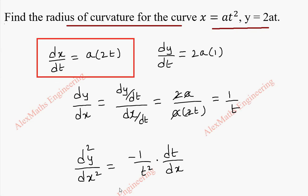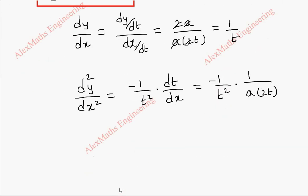So this is minus 1/t² into 1 by a into 2t. So finally, second derivative, d²y/dx² is minus 1/(2at³).